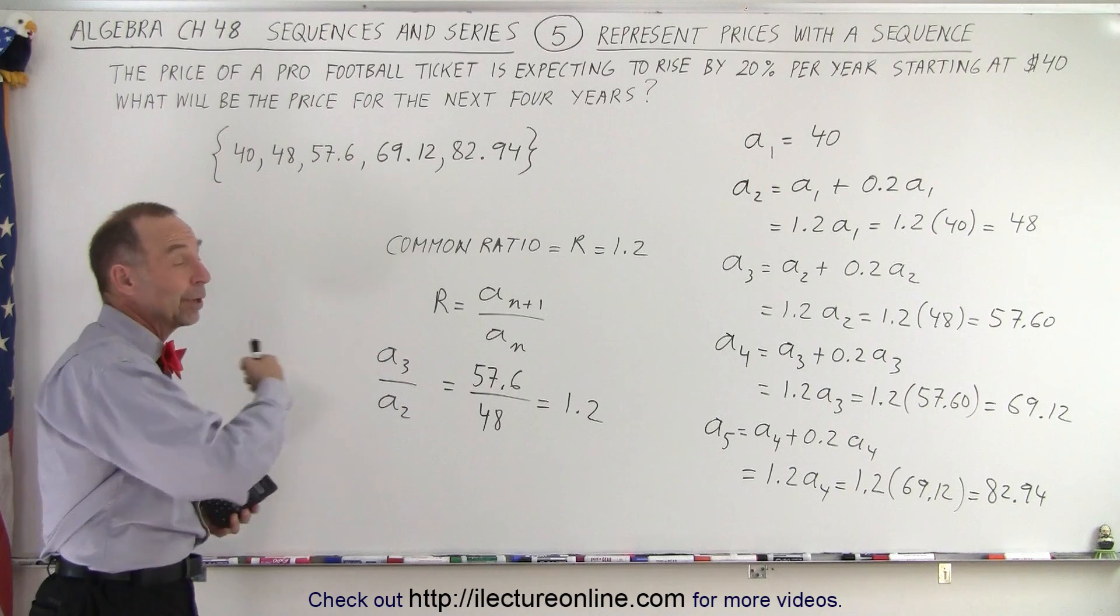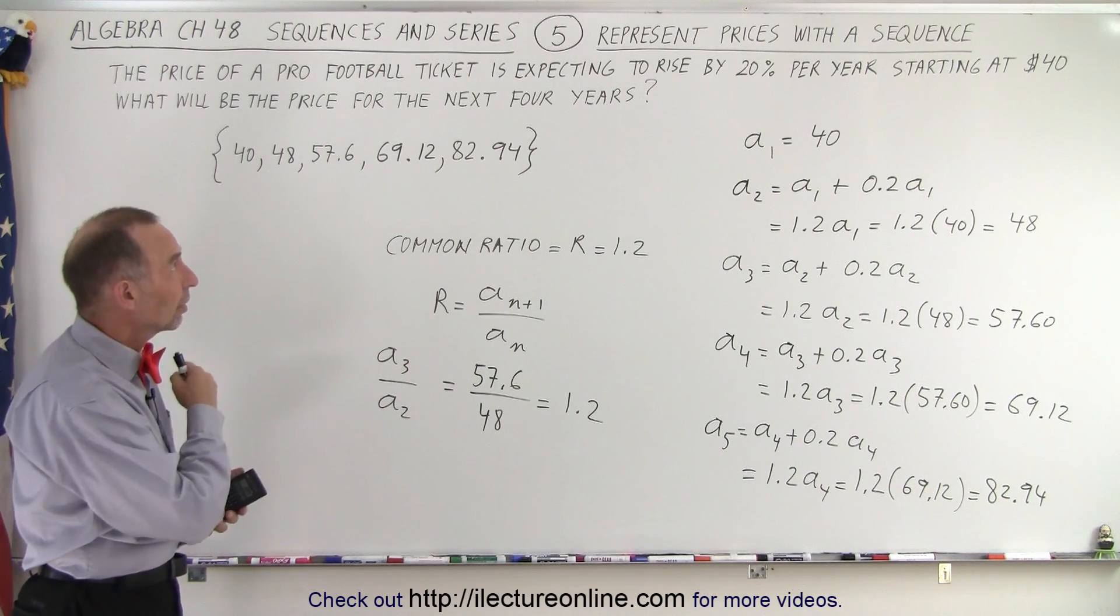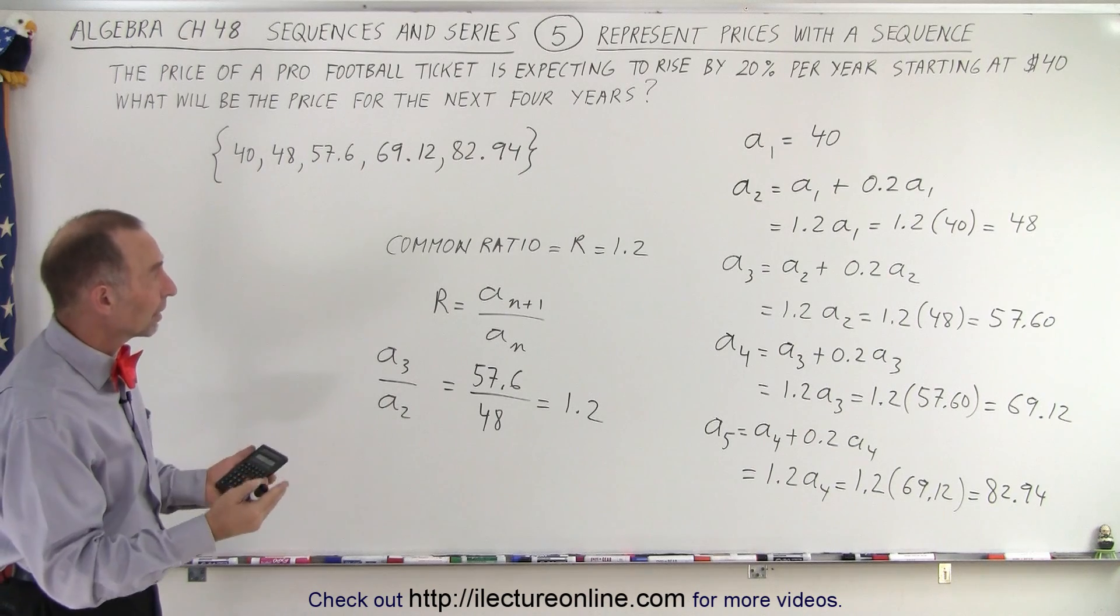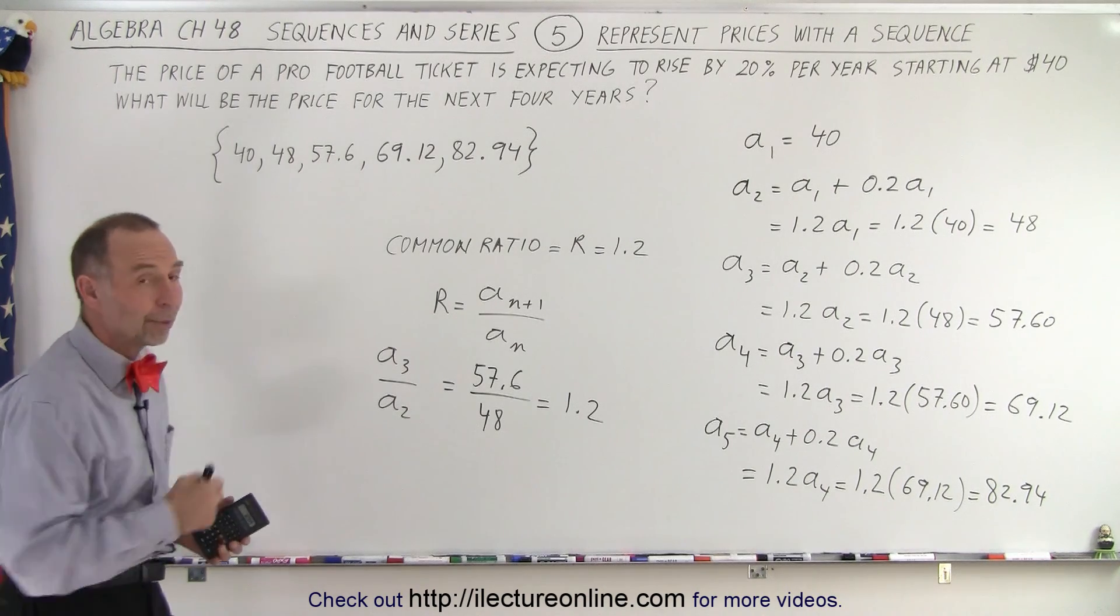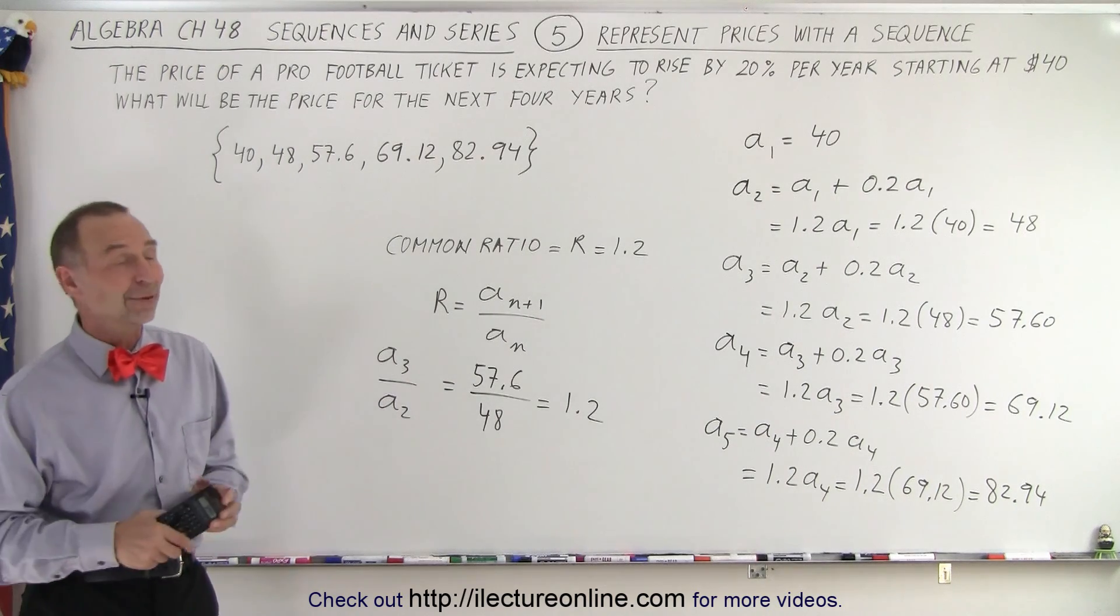We can then find whether or not it's arithmetic or a geometric sequence. In this particular case, it's geometric, we found the common ratio, and that's how in each case we found the next term in the sequence. And that is how it's done.